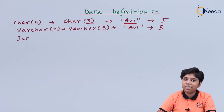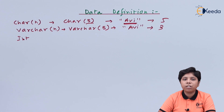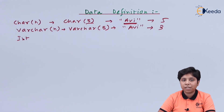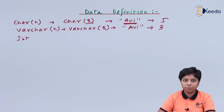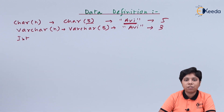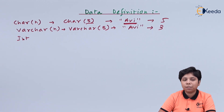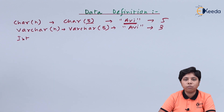The next data type is INTEGER or INT, which is a normal integer number with a range from -2^31 to +2^32. Next is SMALLINT, which is a variation of integer that provides a smaller range of integer numbers.